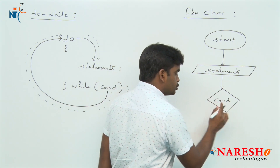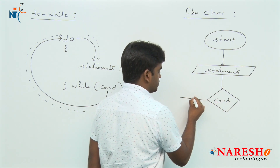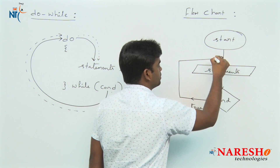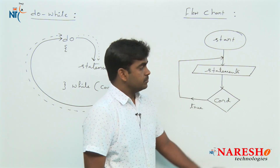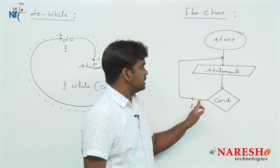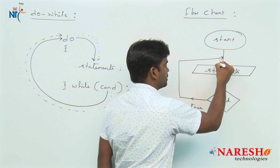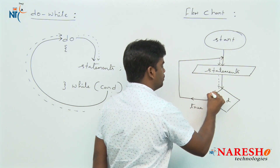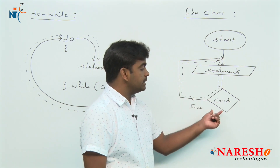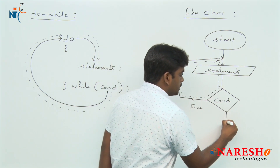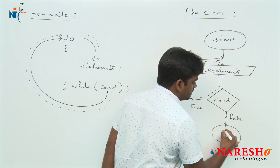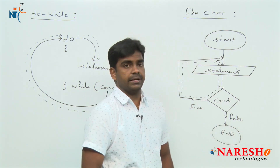If the condition is true, once again the control goes inside, executes the statements, and then checks the condition again. If the condition is true, the loop repeats — any number of times. Whenever the given condition is false, it will come to end.